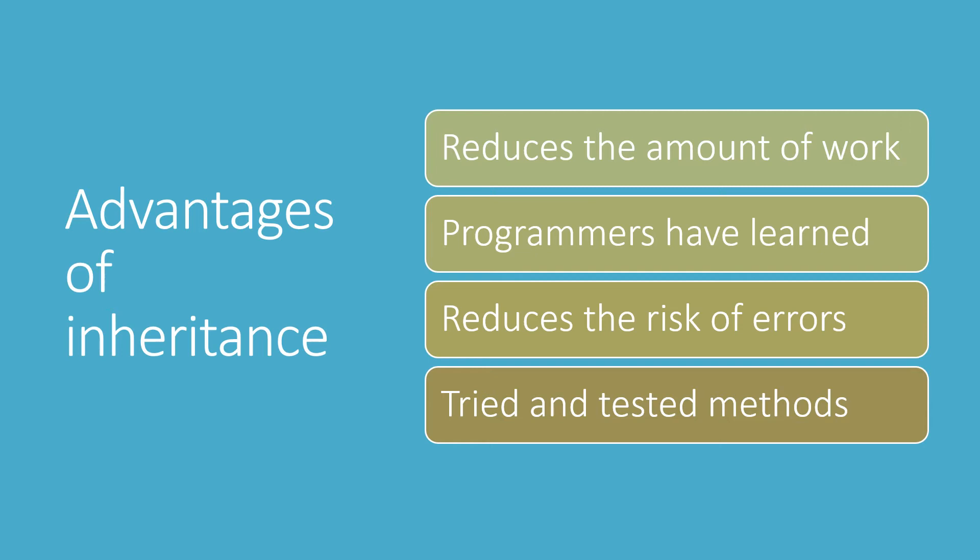Sometimes students say we could simply copy and paste the code that we've already written. You certainly could do this, and if you're not confident with inheritance, that might be a tempting thing to do. The advantage of using inheritance is that all the subclasses are dynamically linked to the superclass. That is, if I make any changes to the superclass, those changes will cascade down to all the subclasses that inherit it. So if I see an error in my code, I only have to change it once and that correction will be inherited by all the subclasses in the program.